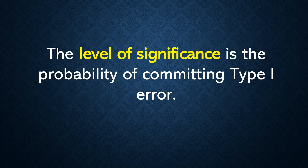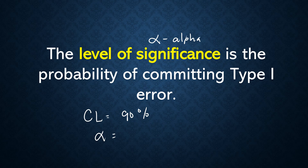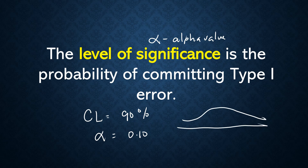We also have what we call the level of significance. The level of significance is the probability of committing Type 1 error. We already discussed this in confidence interval estimation. The representation for level of significance is alpha. For example, with a confidence level of 90%, the alpha value equals 0.10, because 100 minus 90 is 10%, which as a decimal is 0.10.